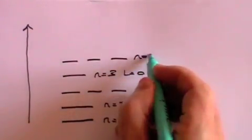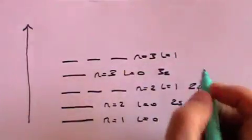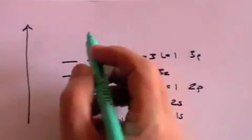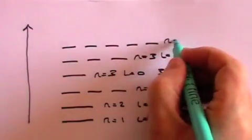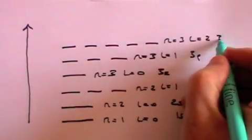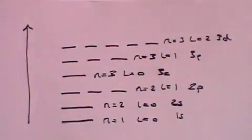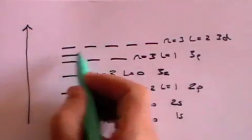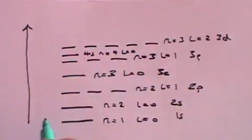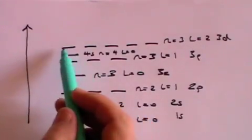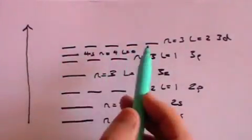orbitals when n equals three and l equals one. Those are the three p orbitals. Above that is the three d, you remember there were five of those, that's when n equals three and l equals two, and that's called the three d. Now by a strange quirk of the way it works, the four s level, which is when n equals four and l equals zero, just happens to be below the three d level in energy terms.